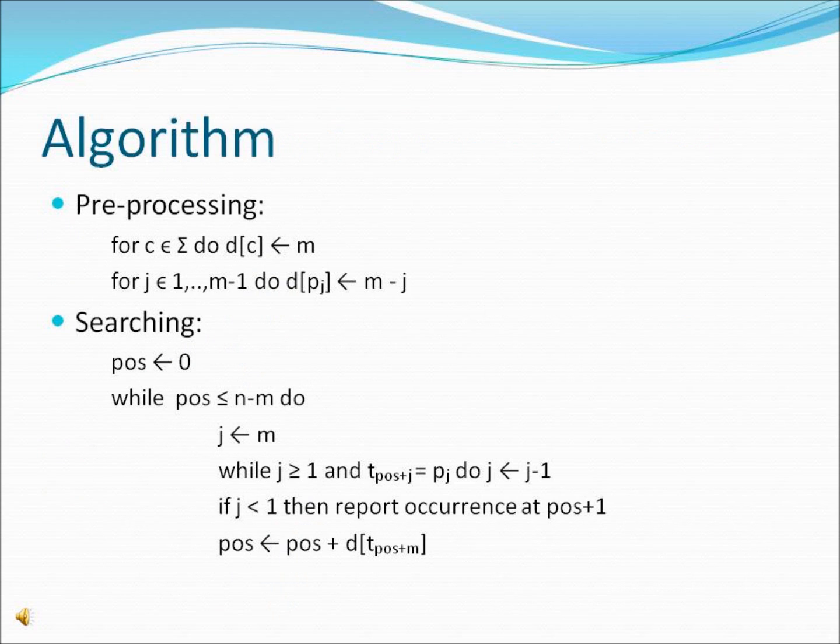This is a version of the actual Boyer-Moore-Horspool algorithm. As you can see, the first step is to create the table of rightmost occurrences for each character in the alphabet. After that, the search loop begins.